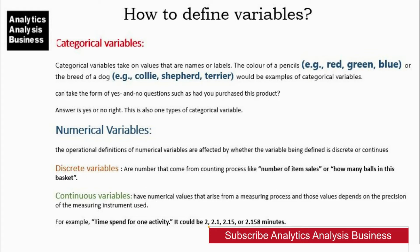Numerical variables. The operational definitions of numerical variables are affected by whether the variable is defined as discrete or continuous. Discrete variables are numbers that come from counting processes, like the number of items sold or how many balls are in a basket. Continuous variables have numerical values that arise from a measuring process, and those values depend on the precision of the measuring instrument. For example, time spent on one activity could be 2, 2.1, 2.15, or 2.158 minutes.